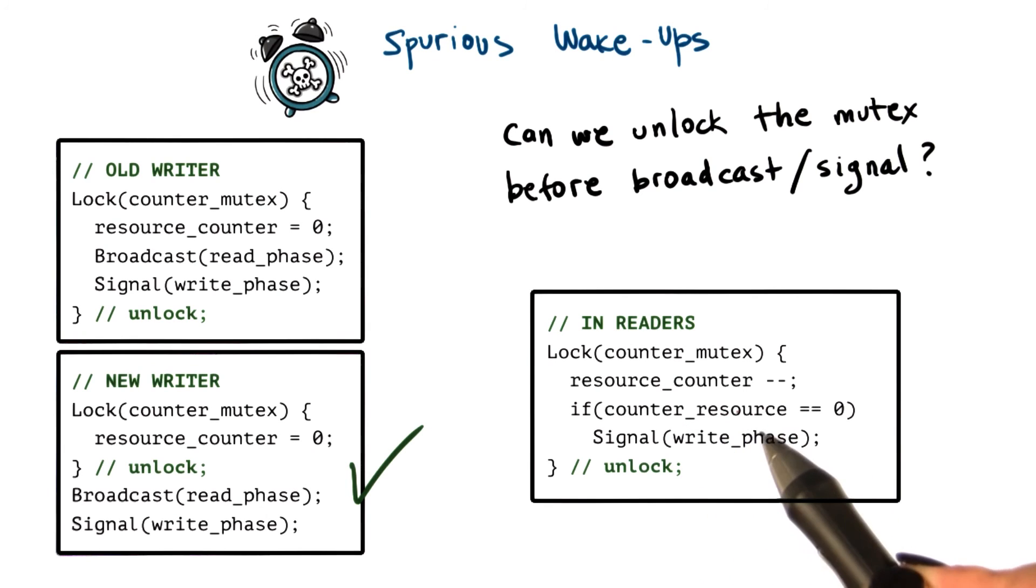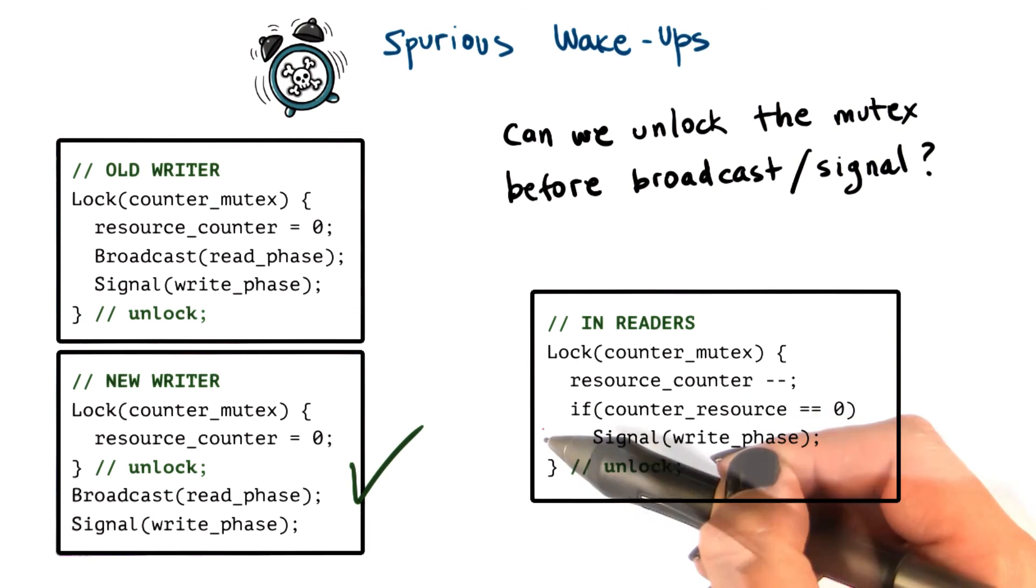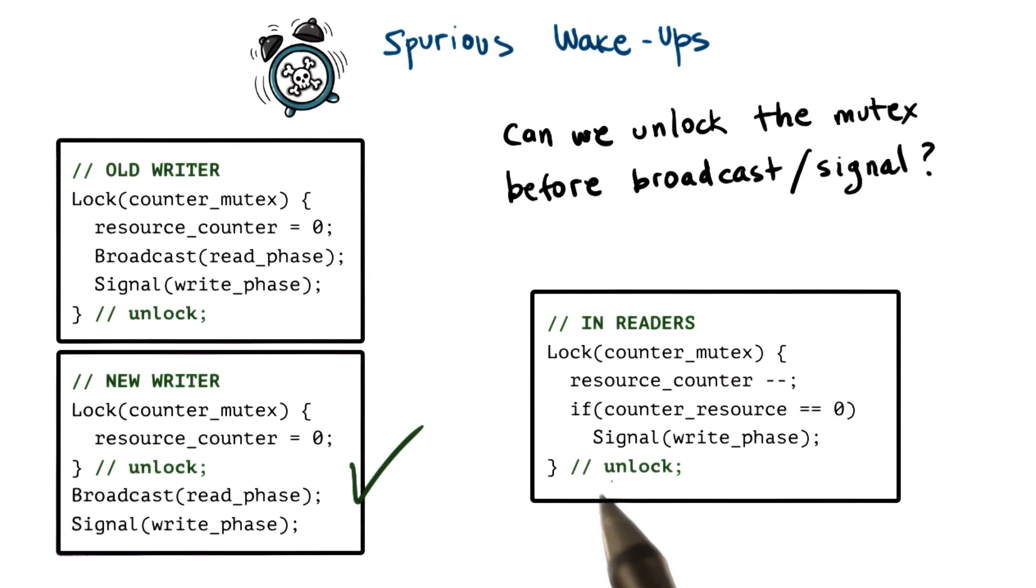resource counter was the shared resource that this mutex was protecting in the first place. So we cannot unlock and then continue accessing the shared resource that will affect the correctness of the program.